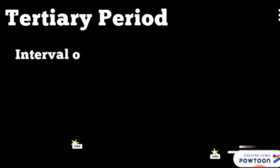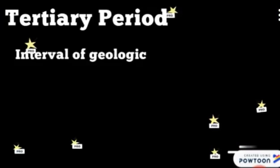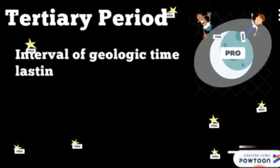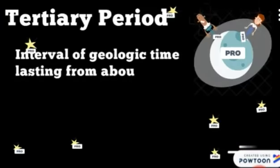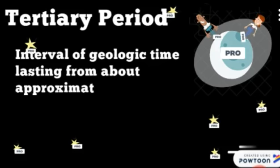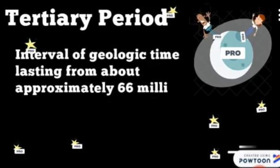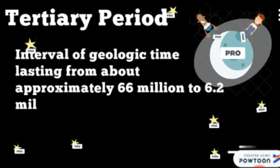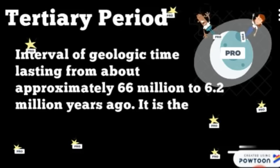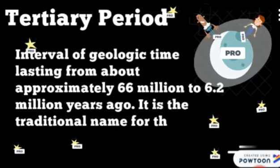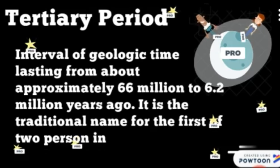Tertiary Period: an interval of geologic time lasting from approximately 66 million to 6.2 million years ago. It is the traditional name for the first of two periods in the Cenozoic Era.